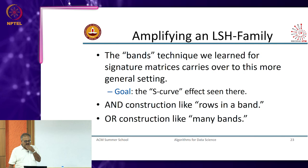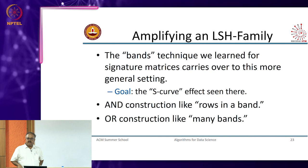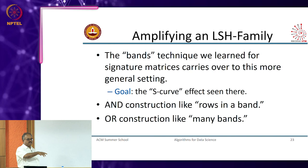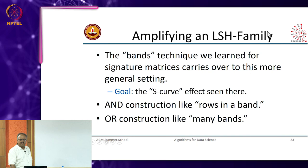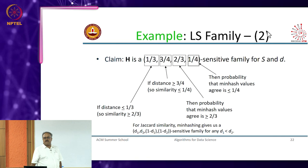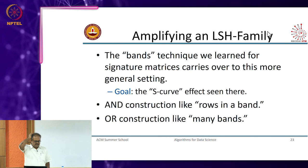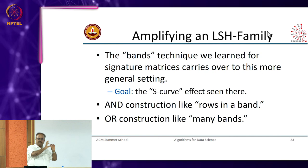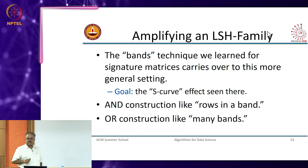Using the bands idea, we take this weak LSH family and amplify it. If you are looking for one-third similarity you get a probability of two-thirds — that is not a great guarantee. What we are going to do is use what we call an amplifying technique. The idea is to use AND and OR constructions. AND is like the rows in a band where every row had to agree, OR is like across the bands where one of the bands has to agree.